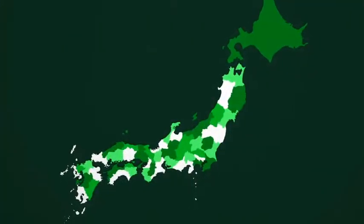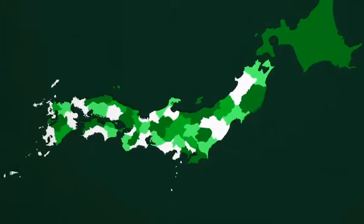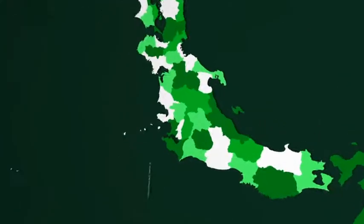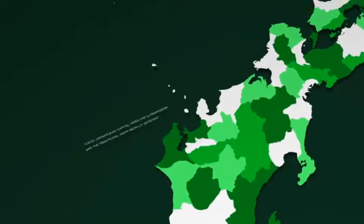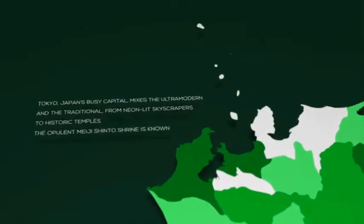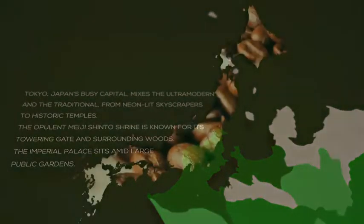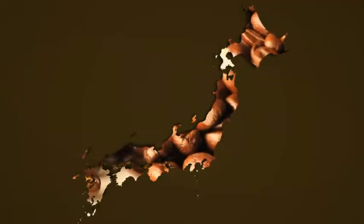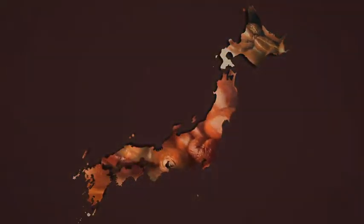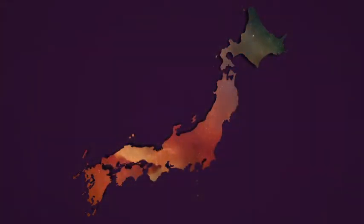Zoom in to areas of interest and hide layers you don't need to focus on certain regions. Animate individual prefectures and add your own text and camera moves as required. Use your own content as a texture for the country map — images, footage, whatever you need.